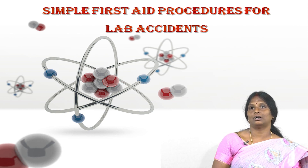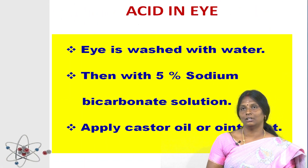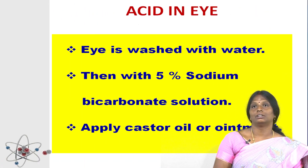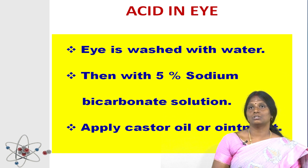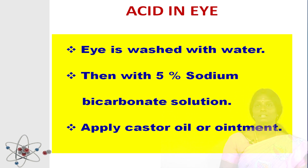What are the accidents that occur in the laboratory? As a chemistry student, you have to know that. The first one is acid in the eye. When you are using acid, it can fall into the eye. The eye is washed with a lot of water. Water is directed into the eye gently with the help of a wash bottle or a tube directly from the water tap. Then the eye is washed with 5% sodium bicarbonate solution. After washing, a drop of castor oil or an eye ointment is applied. Then the victim is taken to the doctor.